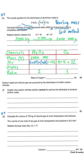We know the mass and MR for aluminium oxide, so we work out the moles. Moles = mass ÷ MR, so 2,000,000 ÷ 102 = 19,608 moles of aluminium oxide. That completes the second column.